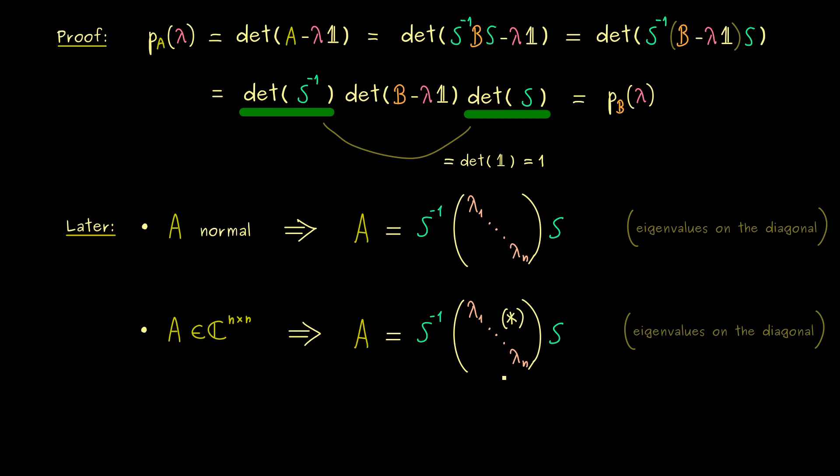Still, this is very helpful, because we have the result that the eigenvalues are on the diagonal as well. And as before, they are counted with the algebraic multiplicities.